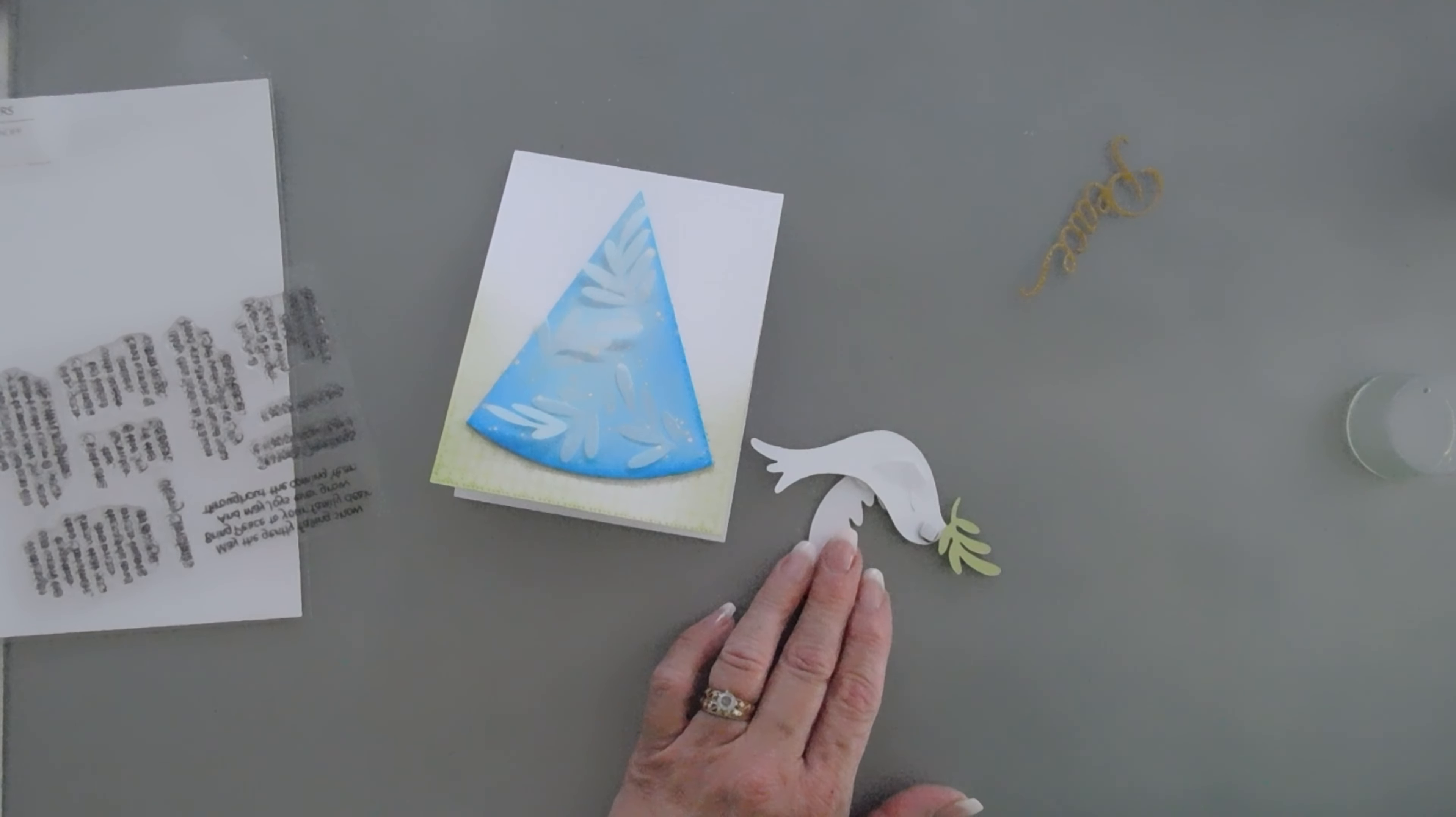I'm going to layer it right over the vellum. And then I will finish off this card using some Spellbinders Peach Opalescent sequins. We're going to add a little bit of sparkle around that tree. Give it a little extra color. And that finishes off my card for today. Thanks so much for joining me. Have a lovely day and we'll see you soon. Bye-bye.